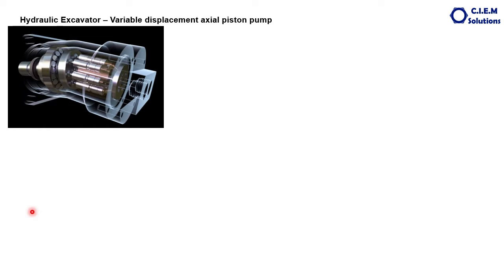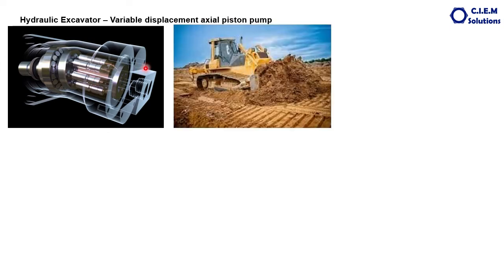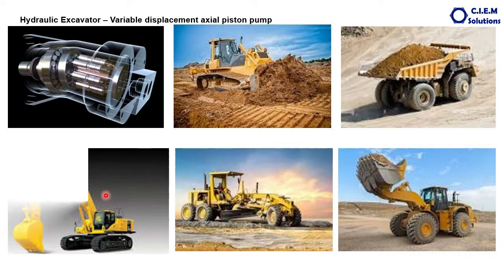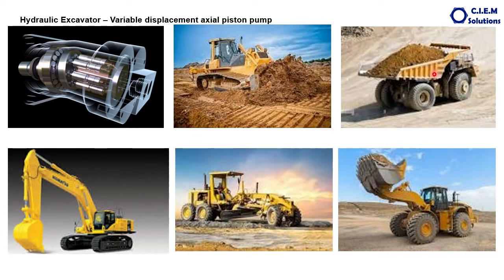This is the axial piston pump shown in this figure. The internal construction of the axial piston pump looks like this. The majority of construction machines like dozers, dumpers, wheel loaders, graders, and of course hydraulic excavators are all fitted with the axial piston pump. Because axial piston pumps are compact in size and more efficient than the gear pump or the vane pump. The efficiency of axial piston pumps will be more than 95%, and their service life will be much more than other pump types like gear pumps and vane pumps.